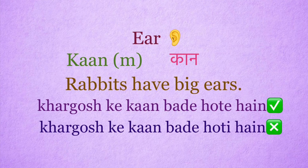Ear, ears: kaan. It's a masculine word, and singular and plural are both the same word. Rabbits have big ears. Right sentence: Khargosh ke kaan badey hote hain. Wrong sentence uses incorrect feminine agreement.